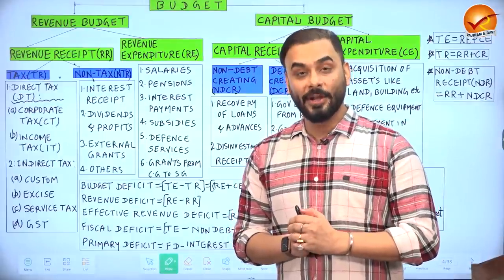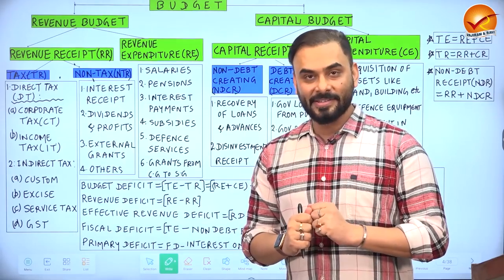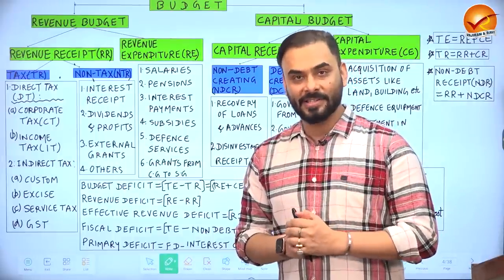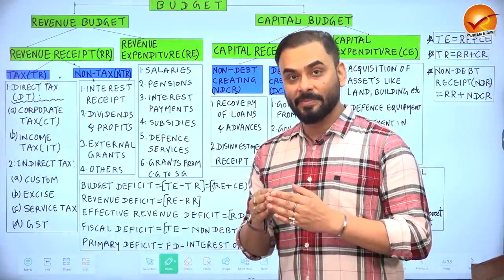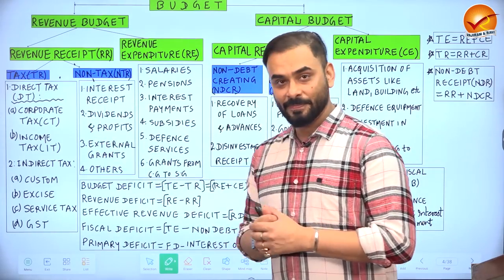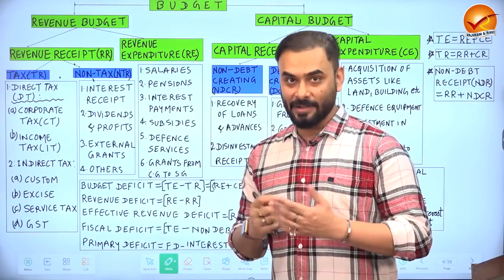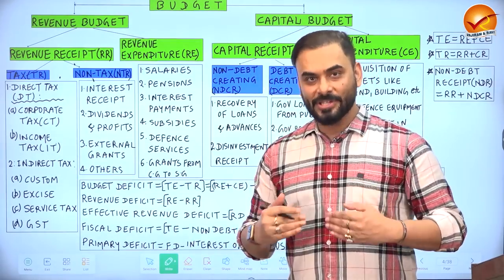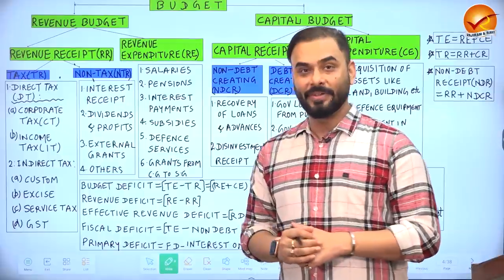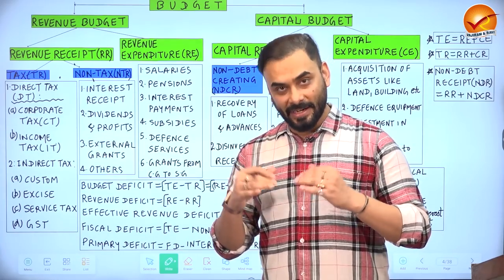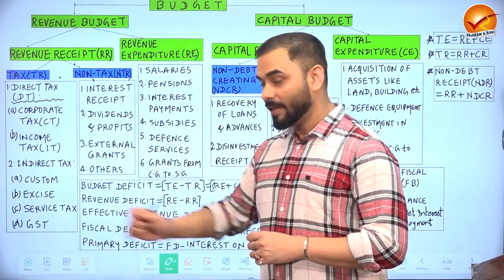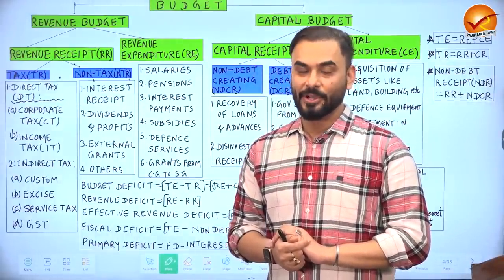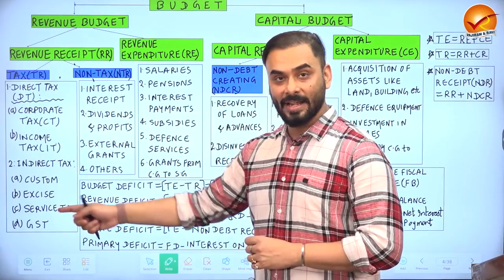Revenue receipts are how the government earns revenue on a regular basis, through two channels: taxes and non-taxes. There are two types of taxes: direct taxes, such as corporate tax and income tax, and indirect taxes, such as customs duties on imports, excise duties on manufactured goods, service tax, and GST, which was introduced in 2017. Revenue earned through direct and indirect taxes is called tax revenue.